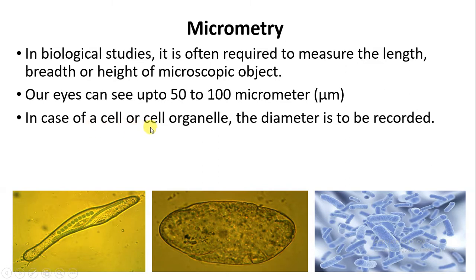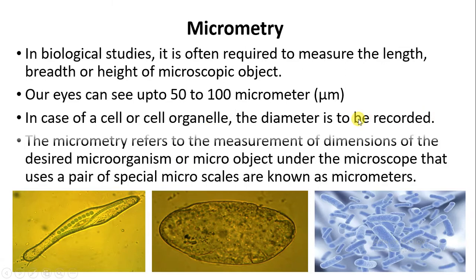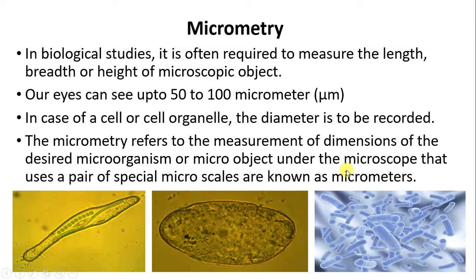Here we can measure the diameter of a cell; we can measure the diameter of any cell organelles like mitochondria, lysosome, and it can be recorded. Micrometry refers to measurement of dimension of the desired microorganism or micro-object under the microscope that uses a pair of special microscales, known as micrometers. In micrometry, we will use two special microscales and obviously we do require a microscope, and we will get to know about the dimension of a particular microscopic organism.